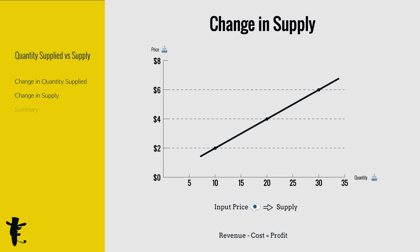What if the price of eggs decreases? The cost of baking cakes decreases, profits increase, so we bake more cakes. Supply increases, so the supply curve shifts right.